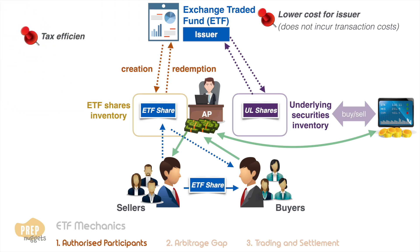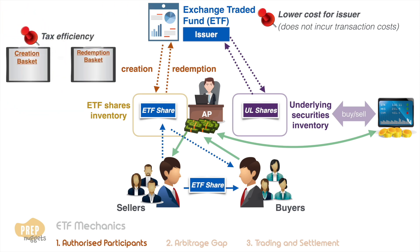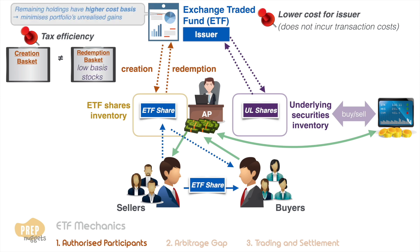Secondly, tax efficiency. ETF managers can choose to publish redemption baskets that differ from the creation basket, allowing them to target low-basis stocks that will be part of the redemption basket. The remaining holdings of the ETF will be of higher cost basis, thereby minimizing the portfolio's unrealized gains, which can potentially minimize capital gains tax.